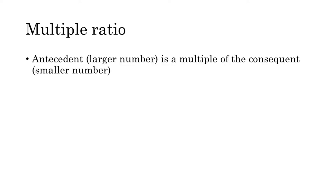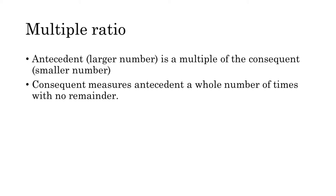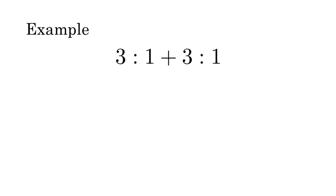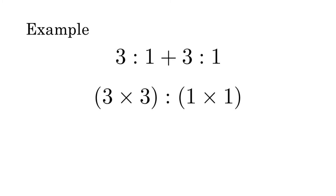A multiple interval is one where the antecedent — the larger number — is a multiple of the consequent, the smaller number. So the consequent can measure the antecedent a whole number of times with no remainder. All multiple intervals can be reduced to n to 1, where n is a whole number. This proposition asserts that if we add a multiple interval to itself, the result will also be multiple. For example, take the ratio 3 to 1 and add it to itself. We can make this happen by multiplying the antecedents and then the consequents. 3 times 3 is 9, and 1 times 1 is 1. For ratios in lowest terms, this proposition is obvious. We'll always be multiplying two whole numbers together for the antecedent, and the consequent will always be 1. Obviously, 1 measures every whole number, so the result will always be multiple.